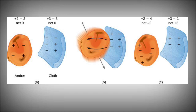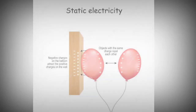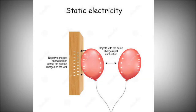Static electricity is a very important thing and has applications. There are two main properties: positive charges repel positive charges, and negative charges repel negative charges. But positive charges attract negative charges. These are the main properties of static electricity.